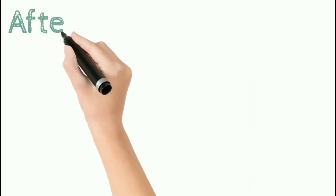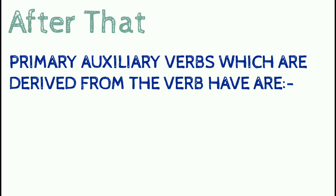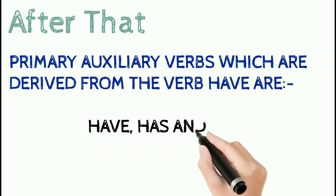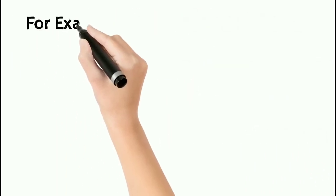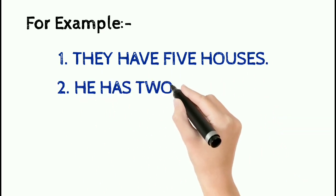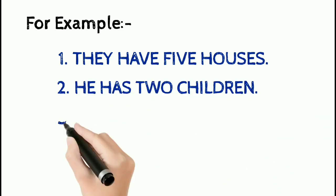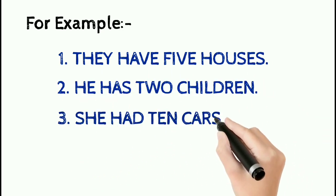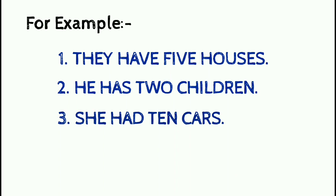Primary auxiliary verbs which are derived from the verb 'have' are: have, has, and had. For example: They have five houses. He has two children. He had ten cars. In the above examples, have, has, and had are primary auxiliary verbs.